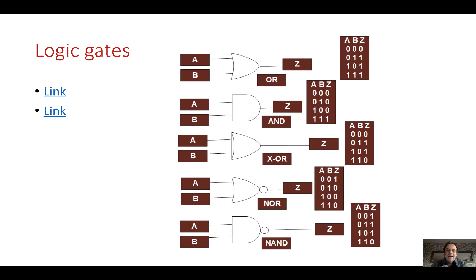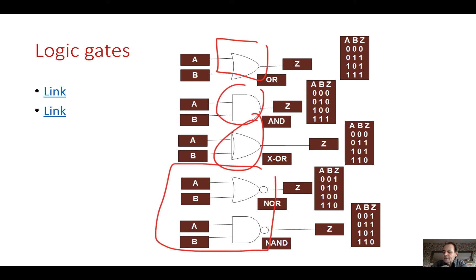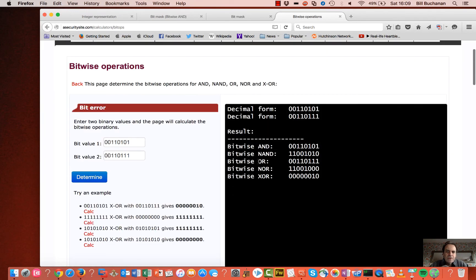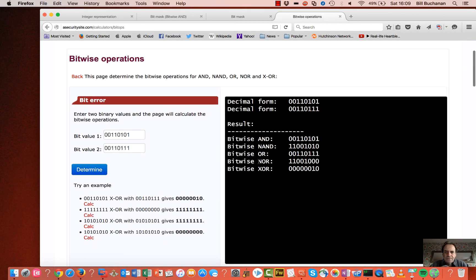Finally, we need to look at some logic gates. These are the gates used to represent OR, AND, NOR — the inverse of OR — and NAND — the inverse of AND. These are the associated truth tables, and there should be a link available to investigate these values.